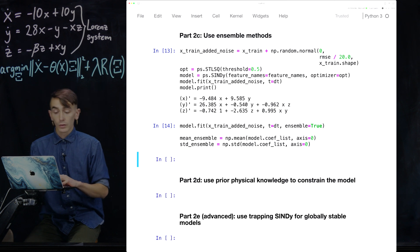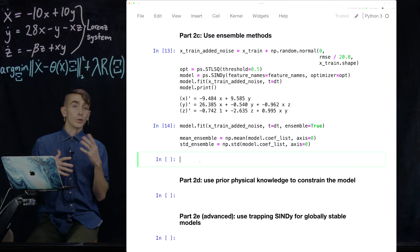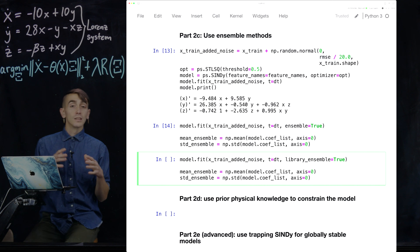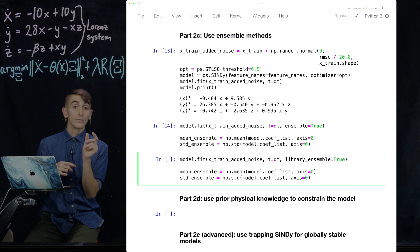It turns out there's another way to actually subsample and generate many models, and that's called library ensembling. And this is a very similar technique. All you need to do is change the ensemble to a library ensemble. And again, this is going to default to building 20 different models.